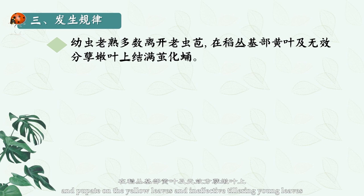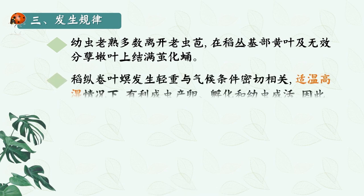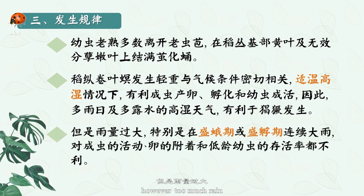Most mature larvae leave the old bracts and pupate on yellow leaves and ineffective tillering young leaves at the bottom of the rice bush. Rainy days and high humidity with lots of dew are conducive to rampant emergence; however, too much rain is detrimental to adult activity, egg attachment, and the survival of young larvae.